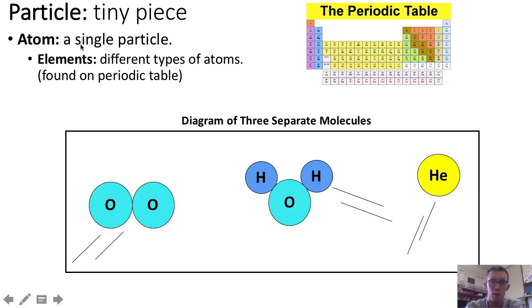Now one of the smallest types of particles in our universe is the atom. And there's different types of atoms called elements, which you can find on the periodic table. And when you clump these elements and atoms together, you get molecules.